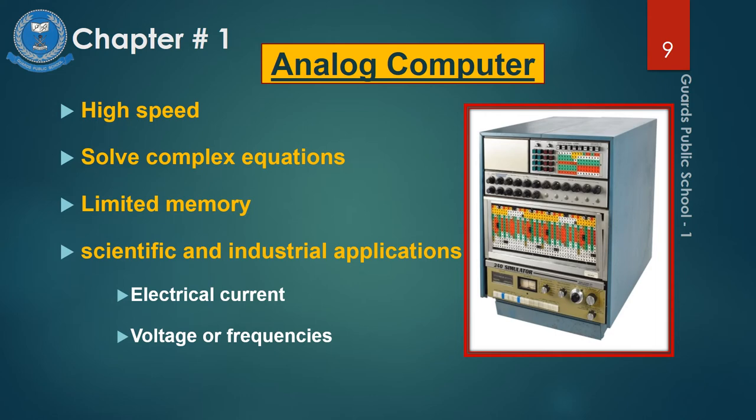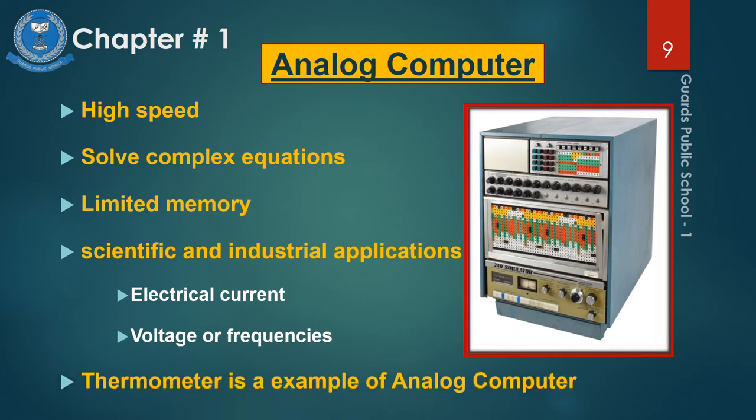Analog computers work on continuous data. Continuous data means voltage, speed, temperature, and pressure, which are displayed as output continuously. A very good example of an analog computer is a speedometer, which you have seen in different vehicles, where you get continuous data and it measures your vehicle speed and displays output continuously.